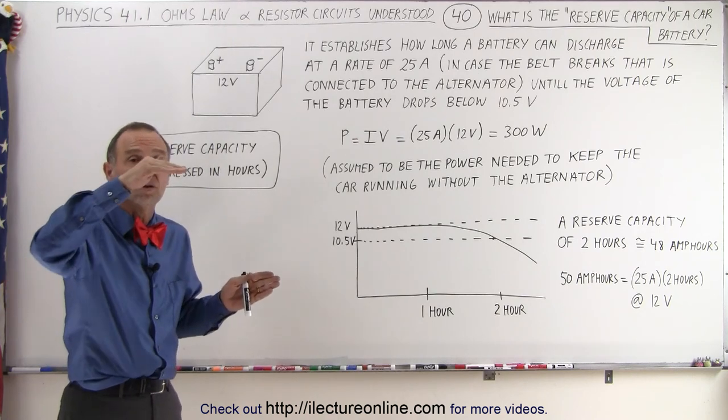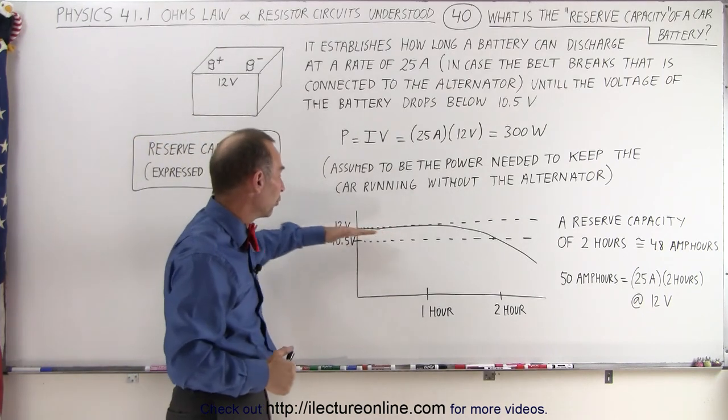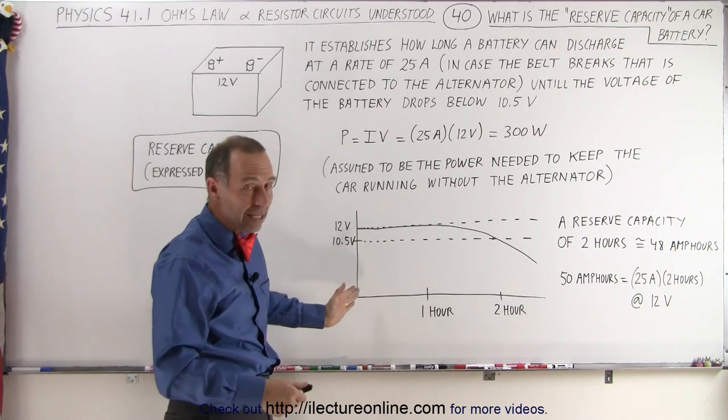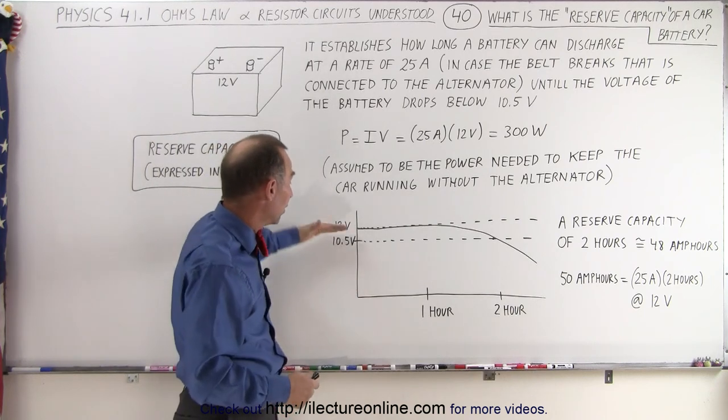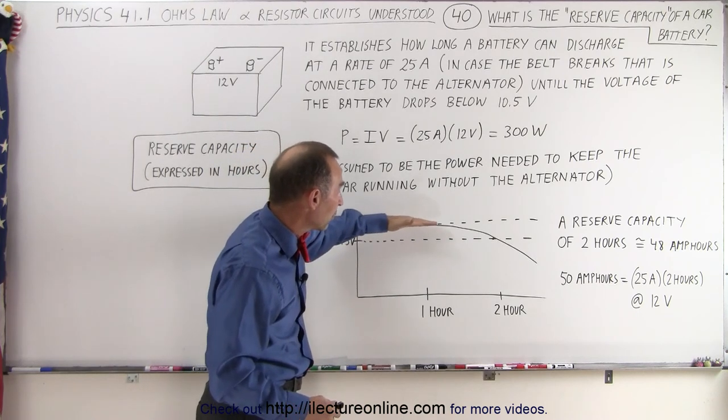At that point, it's assumed that the voltage begins to diminish down below 10.5 volts. So here we have a chart of that. Let's say the belt breaks; now we rely on the battery to produce the electricity for the car. It'll do that for an hour.